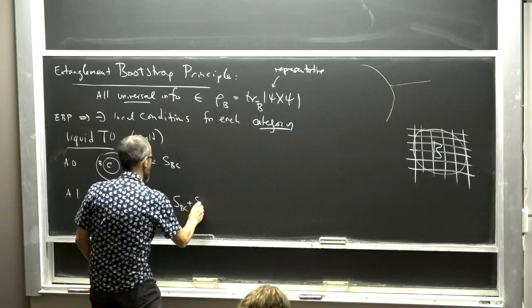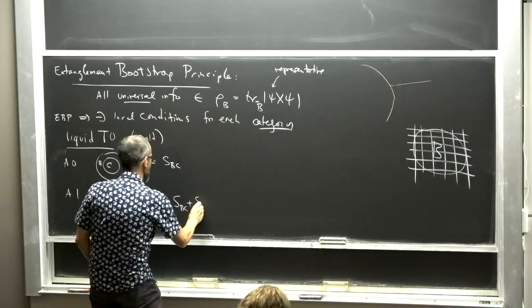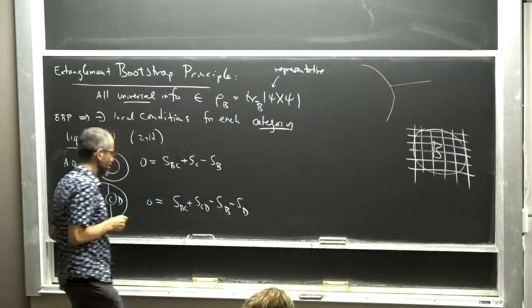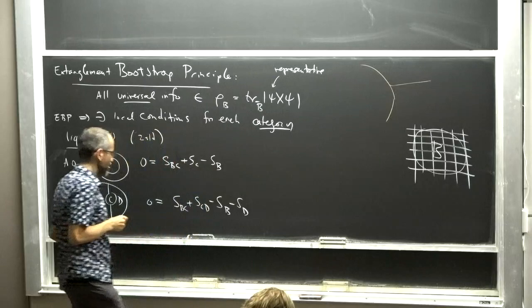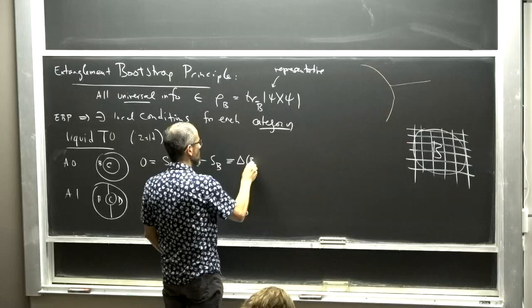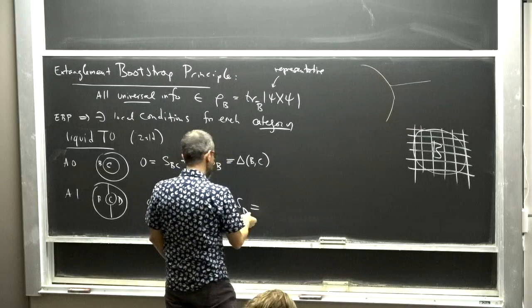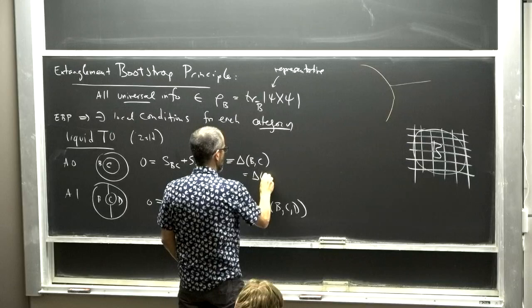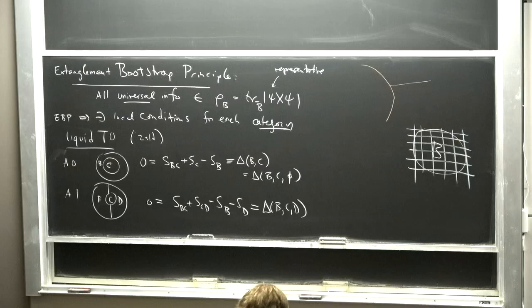These conditions were discovered by Bowen Shi and Isaac Kim. They are conditions on entanglement entropies of parts of a ball. For A0 we pick a small ball inside our bigger ball, divided into its thickened boundary and its interior — call this C and B. The condition is that a certain combination of entanglement entropies vanishes: S(BC) + S(CD) − S(D), which I'll call Δ(BC;D), and the simpler version Δ(BC) = S(BC) + S(C) − S(B).